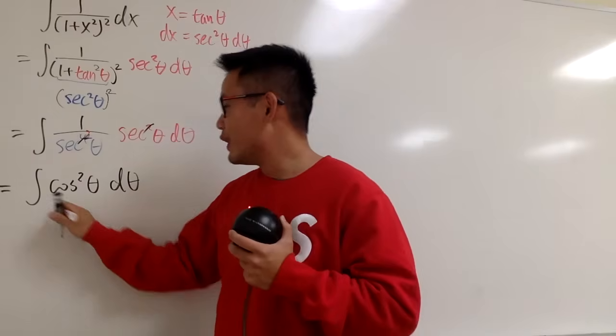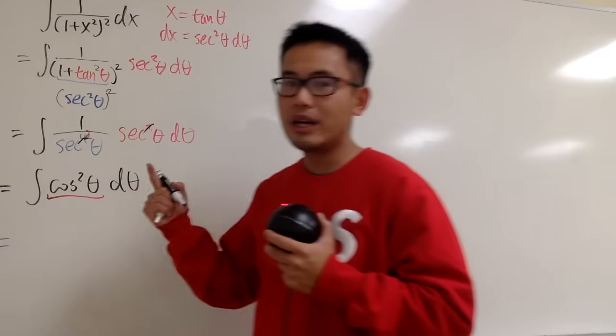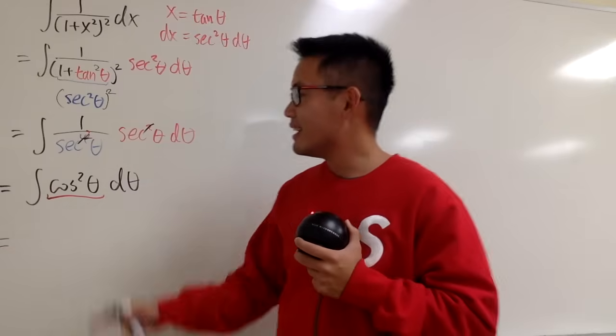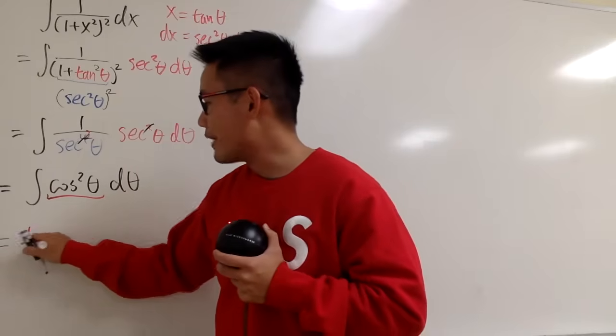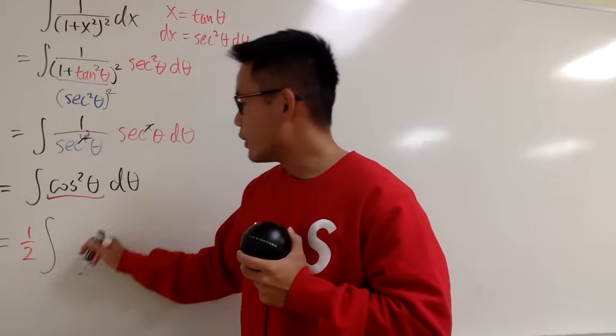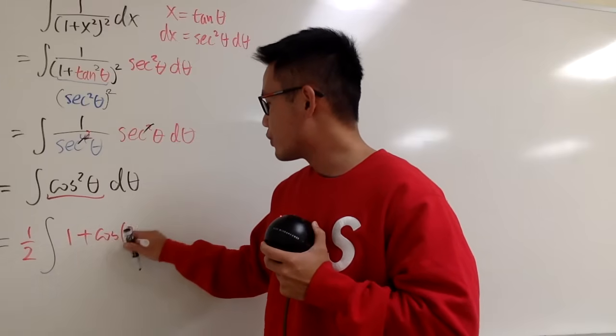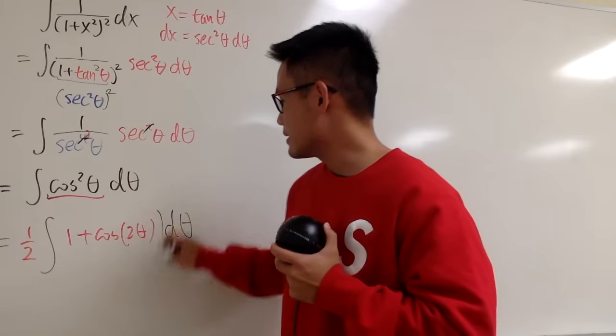How can we integrate this? We have to use an identity. And the identity is we have to do the power reduction formula. This is equal to 1 half, let me just put a constant multiple in the front, and then we have 1 plus cosine of 2 theta d theta like this.